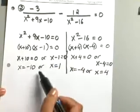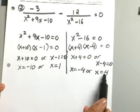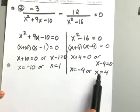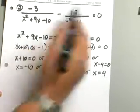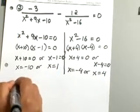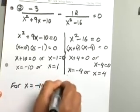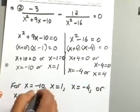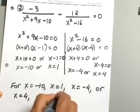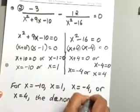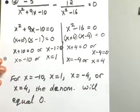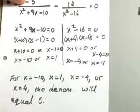So when x equals negative 4 or positive 4, the second denominator will equal zero, which tells us to discard negative 4 and positive 4 if they show up in our solution set. For this whole problem together, for x equals negative 10, x equals 1, x equals negative 4, or x equals 4 — for any of these four values, your denominator will equal zero, and you would keep those outside of your solution set. These two examples should give you a good idea of what we are trying to do here.